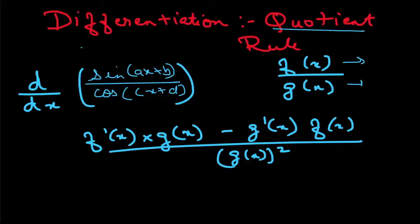And the way we use this rule is f'(x) which is the numerator's derivative times the denominator minus g'(x) times f(x) divided by g(x) whole squared.